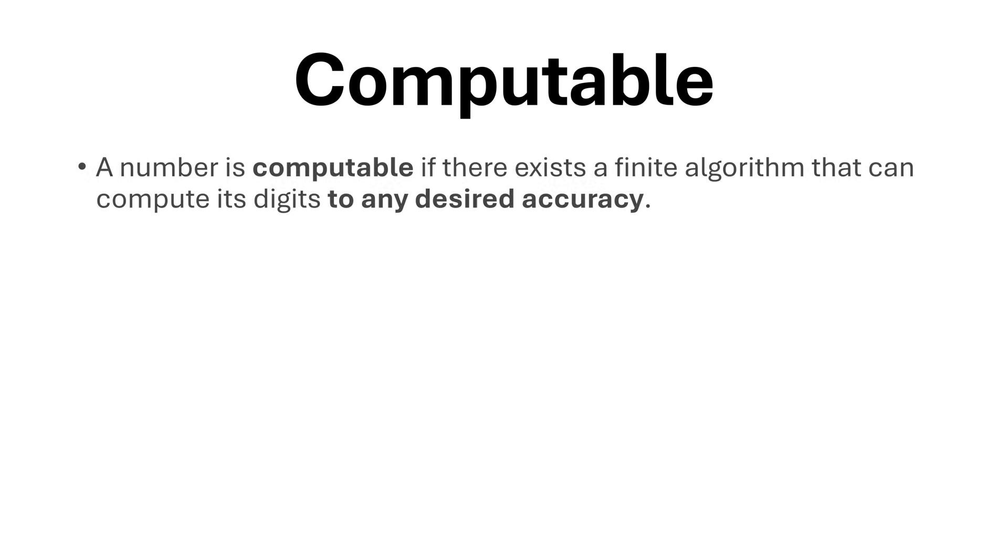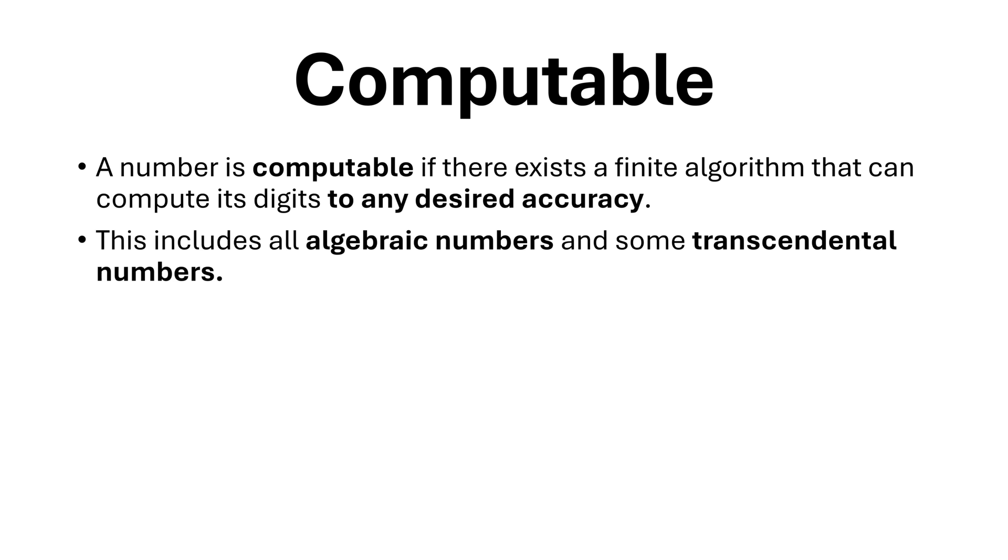A number is computable if there exists a finite algorithm that can compute its digits to any desired accuracy. This includes all algebraic numbers and some transcendental numbers. Most real numbers are not computable.